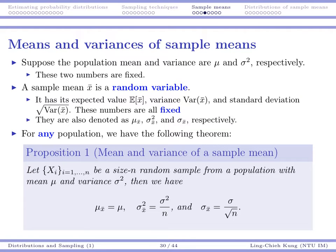Suppose the population mean and population variance are mu and sigma squared, respectively. We know these two numbers are fixed — they exist somewhere even if we don't know them. Now, x-bar is a random variable, so we want to find its expected value and its variance (and therefore its standard deviation). These are fixed values denoted as mu-x-bar, sigma-squared-x-bar, and sigma-x-bar — they are fixed values to be determined, not random variables.